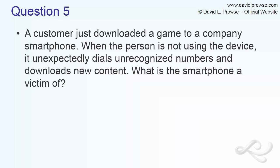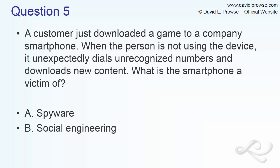Question 5: A customer just downloaded a game to a company smartphone. When the person is not using the device, it unexpectedly dials unrecognized numbers and downloads new content. What is the smartphone a victim of? The possible answers are: A, spyware; B, social engineering; C, Trojan horse; or D, worms.